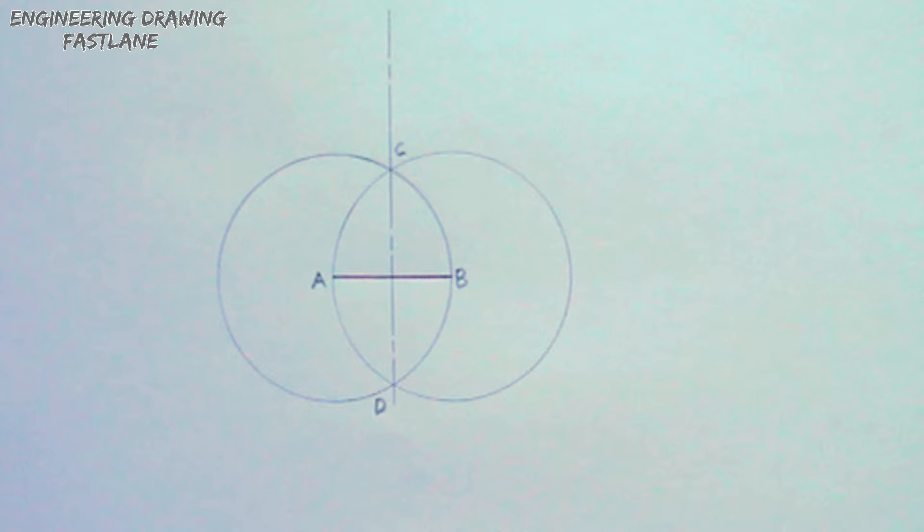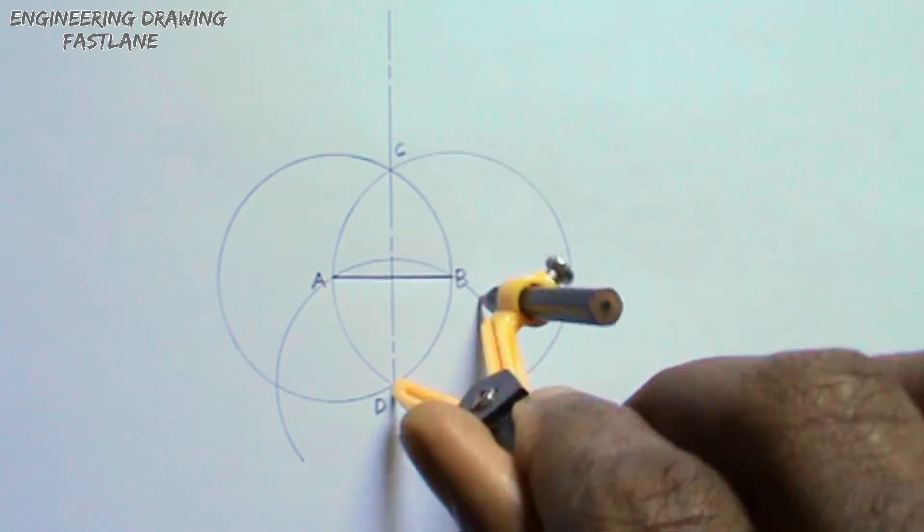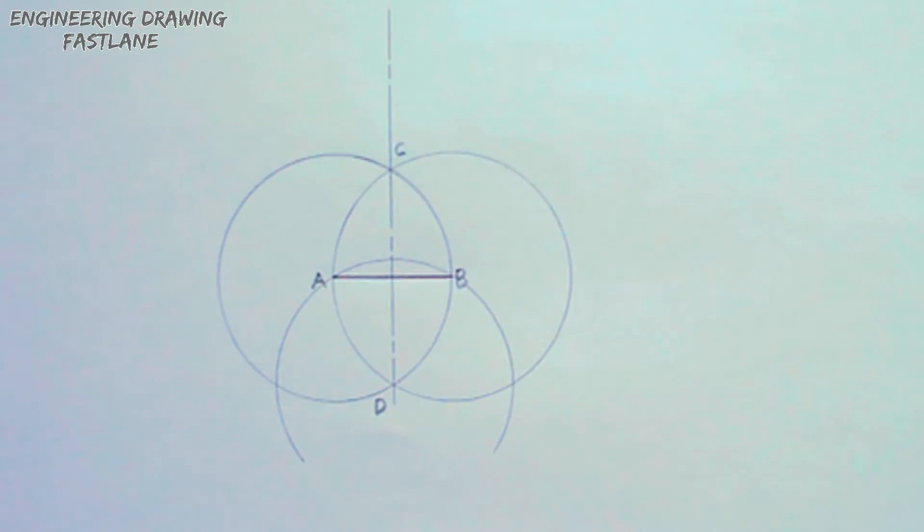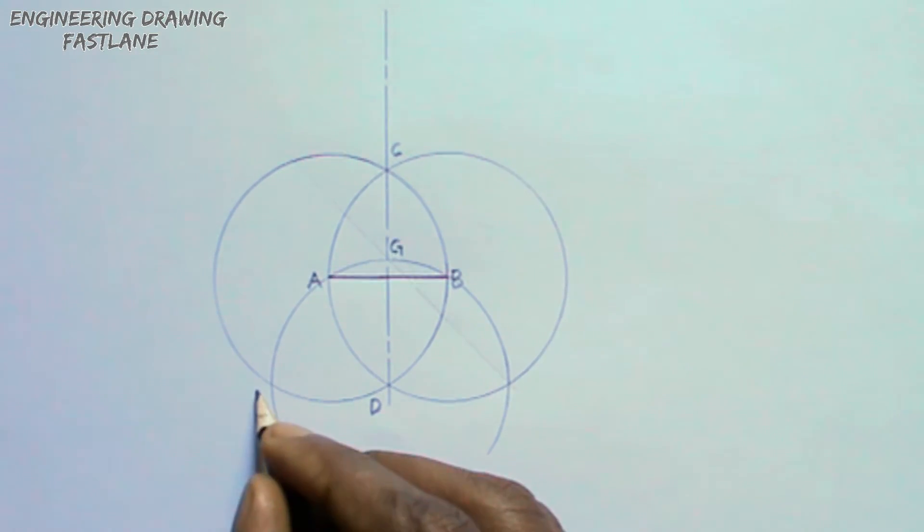Now I will place my compass on point D, then I will draw an arc using a radius equal in length as line AB. I will label the points where the arc intersects the circles E and F, and the point where it intersects line KD, G.